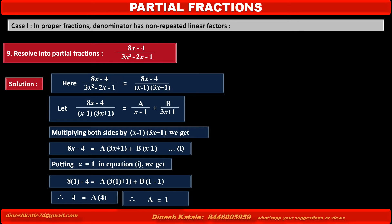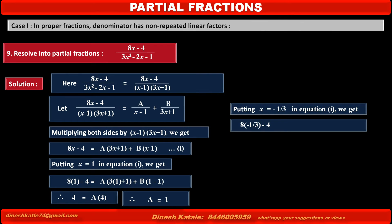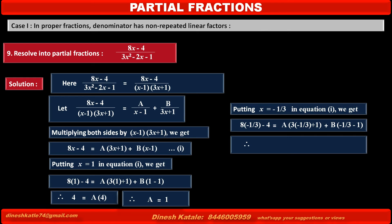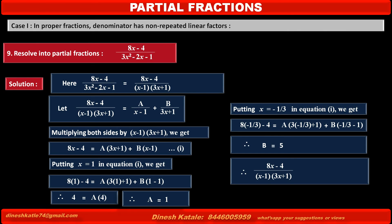To find B, we eliminate the A term by putting x = -1/3 in equation 1. The left-hand side becomes 8(-1/3) - 4, and the right-hand side: the first term becomes A(3×(-1/3) + 1) = 0, and the second term becomes B(-1/3 - 1). Solving, we get B = 5.